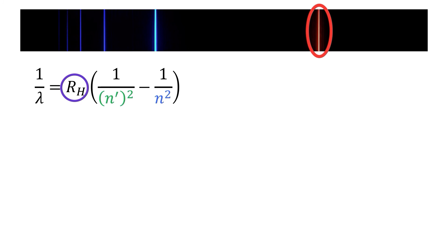In the Rydberg equation, R_H is the Rydberg constant which has the value given. First, let's fill in our values of the Rydberg constant and the principal quantum numbers, where n' is equal to 2 because we are working with the Balmer series here.